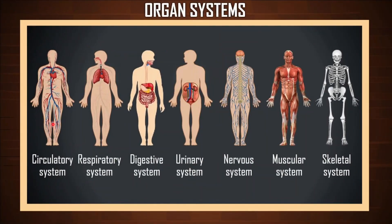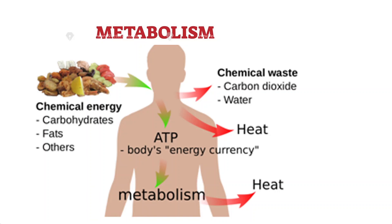The various organ systems help in proper functioning of our body. Life processes can happen only when these organ systems work in coordination with each other. Not just coordination among different organ systems is essential, but energy is also required to operate these life processes. Energy comes from food. When food gets digested, it turns into soluble form, which is then transported to different cells of our body via the blood. Production of energy takes place in the cells.